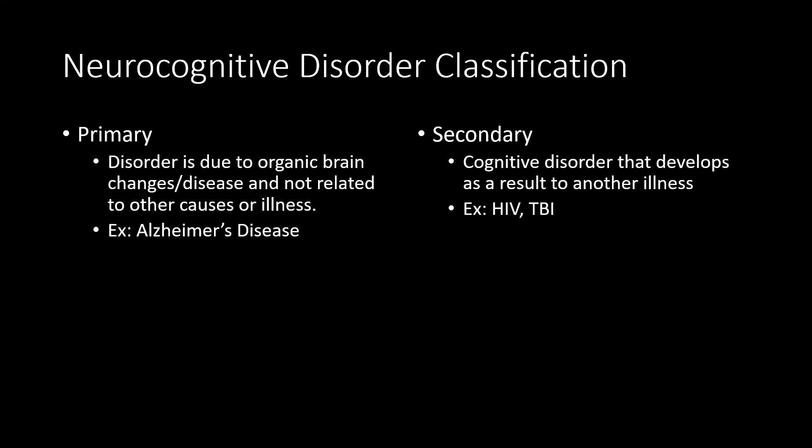Neurocognitive disorders can also be classified as either primary, which means the disorder is due to organic brain changes or diseases and not related to other illnesses, such as Alzheimer's. Or they can be secondary, which is a cognitive disorder that develops as a result of another illness, such as traumatic brain injuries or HIV infections.